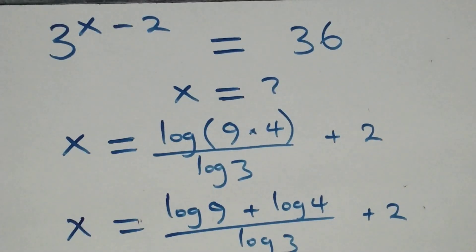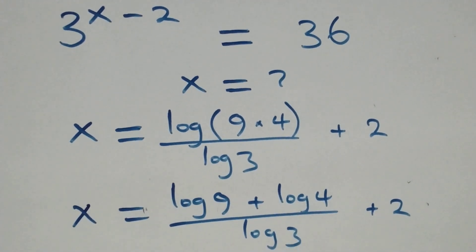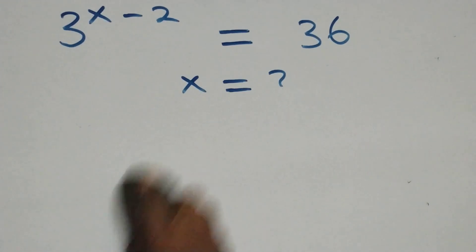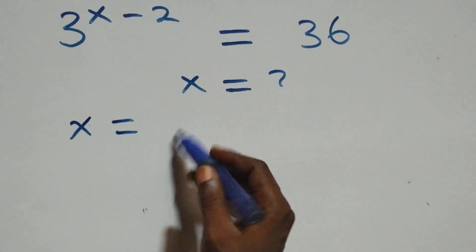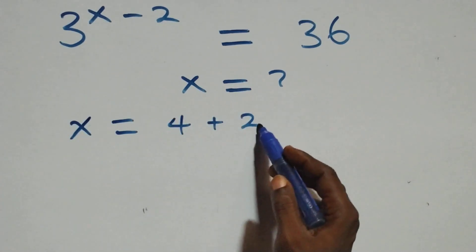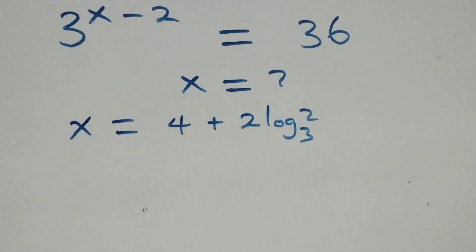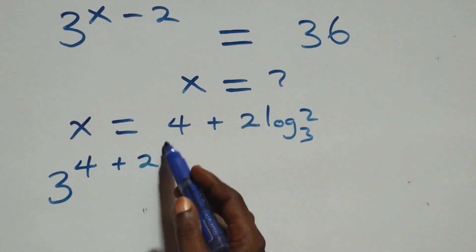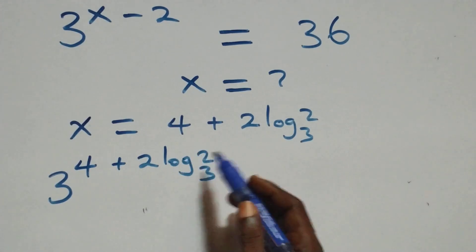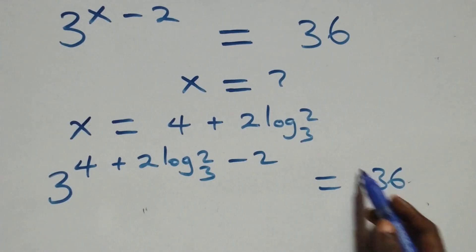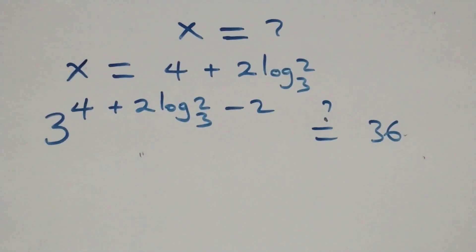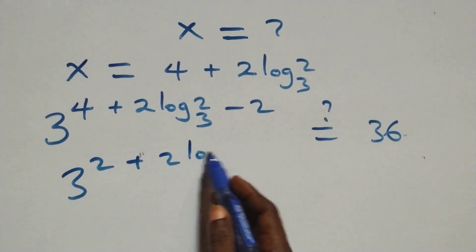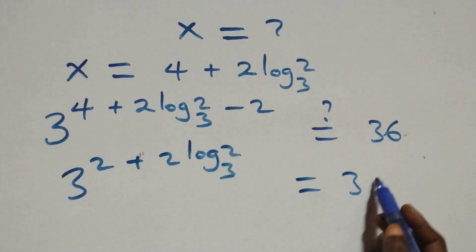Let's check to verify this satisfies the given problem. We substitute the value of x, which is x equals 4 plus 2 log base 3 of 2. What we have becomes 3 raised to power (4 plus 2 log base 3 of 2), then minus 2, equals 36. Bringing 4 minus 2 together gives 2, so we have 3 raised to power (2 plus 2 log base 3 of 2) equals 36.